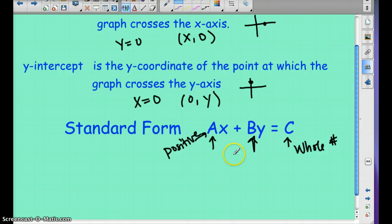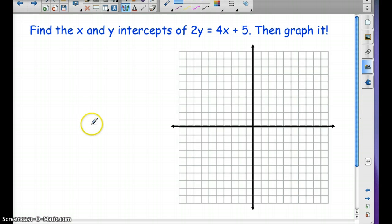And I'll show you an example here on the next slide. So find the x and y-intercepts of 2y equals 4x plus 5. Then graph it. So I'll give you a moment here to write down your graph in your notes.